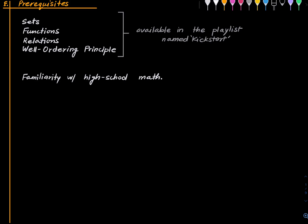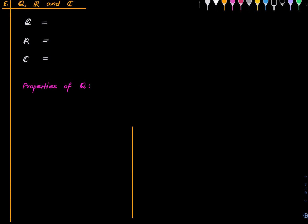Let us start by talking about rational numbers before we get into the abstract notion of a field. This symbol stands for all rational numbers — those numbers which can be written in the form p/q where p is some integer and q is a non-zero integer.